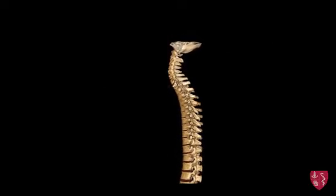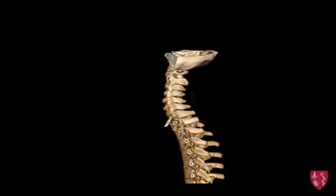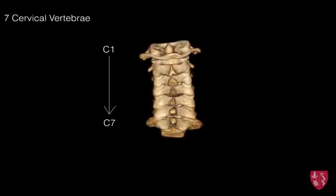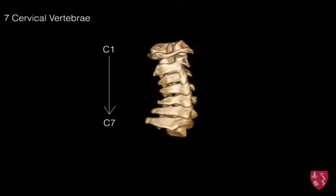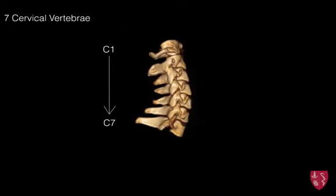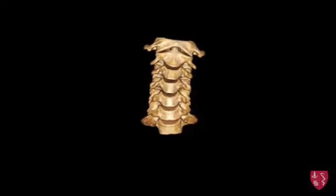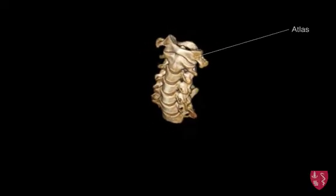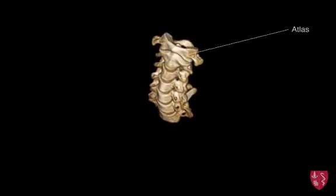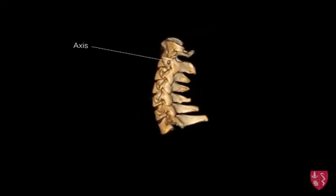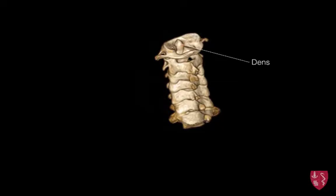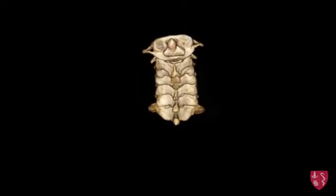We will first take a look at the cervical vertebra. There are seven cervical vertebra numbered from superior to inferior. The first cervical vertebra, otherwise known as the atlas, supports the weight of the skull, while the axis serves as a point of rotation around the dens, a unique bony feature allowing for increased range of motion in this region.